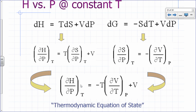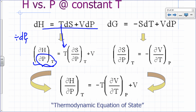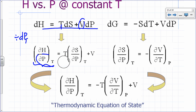If you have dH equal to T dS plus V dP, imagine dividing this through by dP at constant T. So you have the partial of H with respect to P at constant T equal to T times the partial of S with respect to P at constant T, plus V — since dP over dP is 1, that last term is just V.